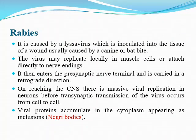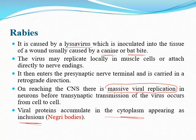The last subject is rabies. Rabies is caused by a bite of a wild animal — either canine or bat — caused by Lyssavirus. The virus may replicate locally in muscle or attach to a nerve ending, then retrogradely pass to the CNS, where it undergoes massive viral replication and trans-synaptic transmission from cell to cell. On brain biopsy, there will be protein accumulation in the cytoplasm appearing as inclusion bodies called Negri bodies.